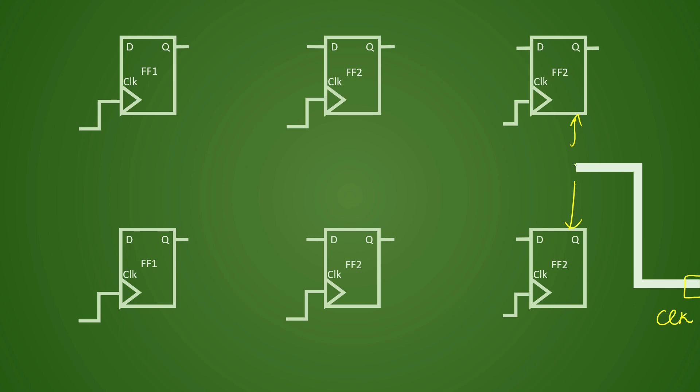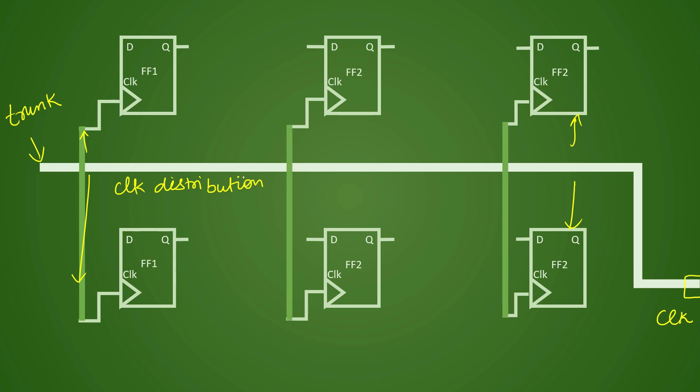And then from there, it will draw a trunk like this. So this is your trunk. And from this trunk, it has to distribute the clock to all the pins. So that is your clock distribution.